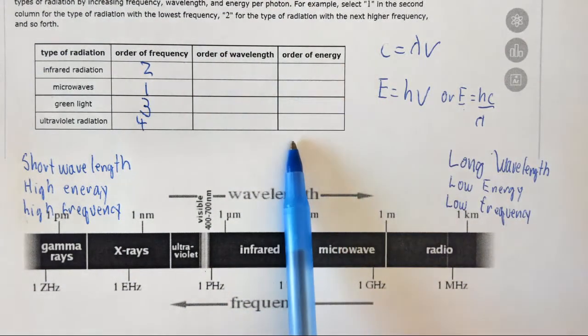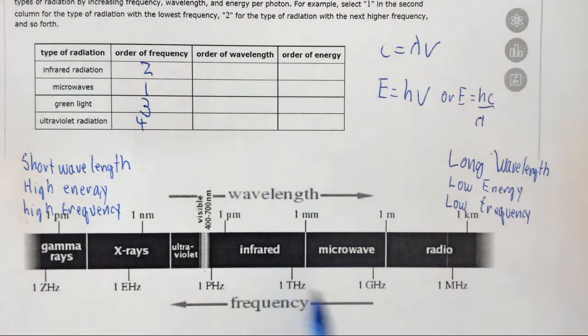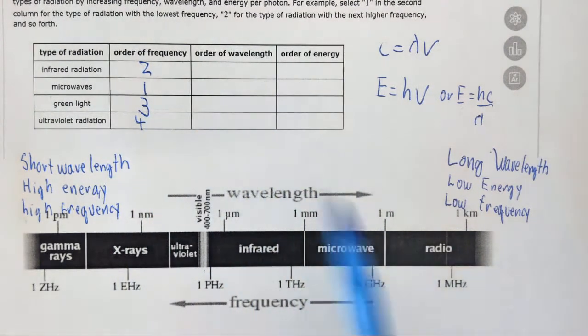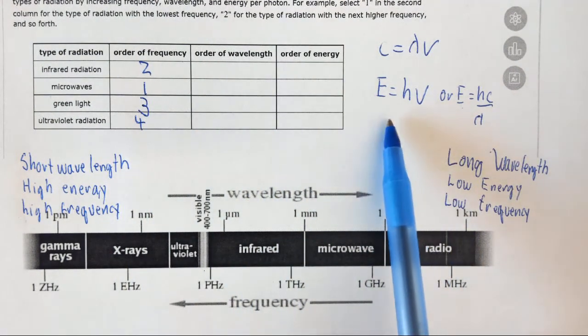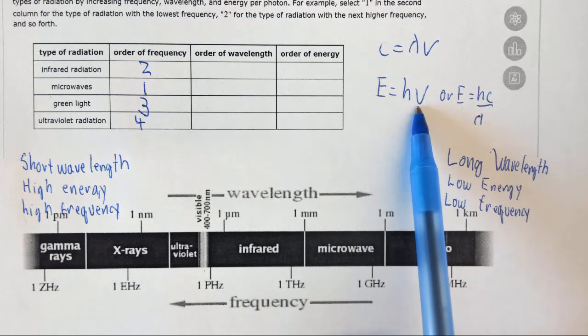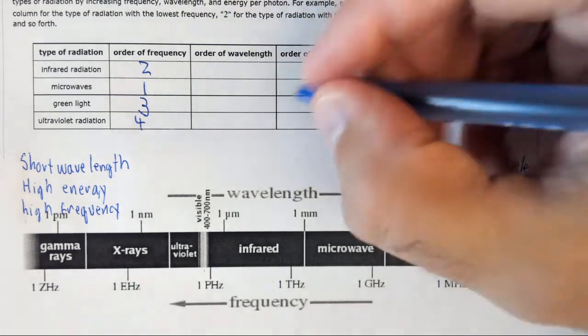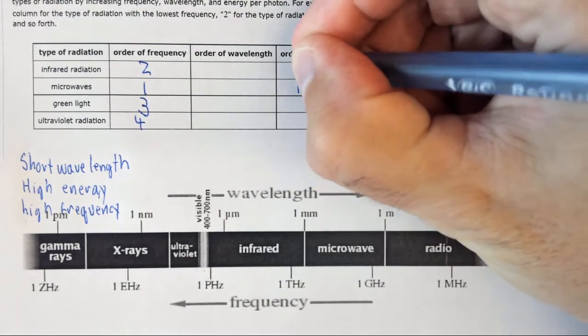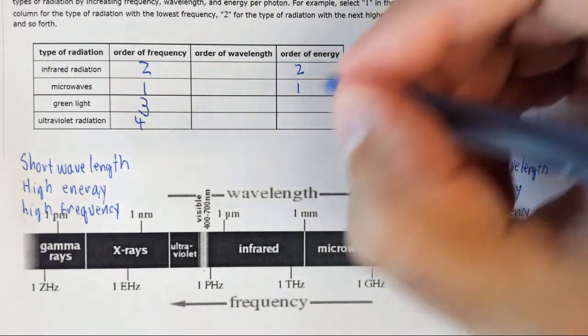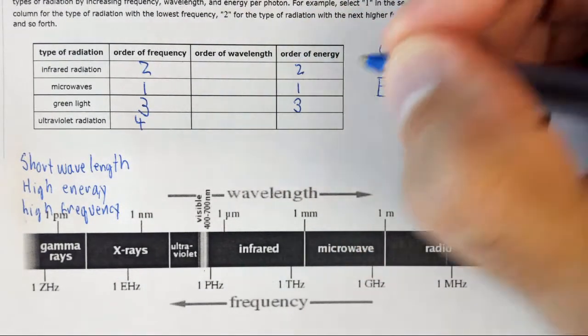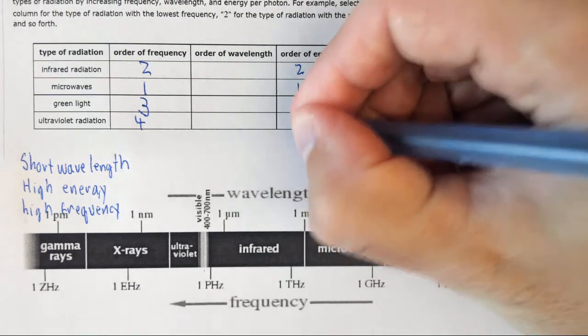Note that the energy is going to be exactly the same because if you have the lowest frequency you definitionally must have the lowest energy. The lower this frequency then you multiply by a constant, energy is of course going to be lower as well. So this is going to be one, two for infrared, three for green light, and ultraviolet will be four.